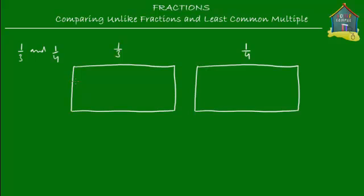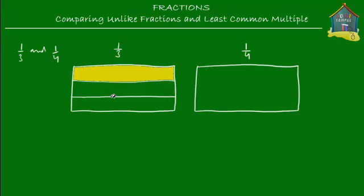Let's mark one-third on the first lasagna. Since we have one-third, that means we cut the lasagna into three slices. Let's cut it horizontally and mark one-third — one-third is one of these long slices. On the next lasagna, we cut into four equal slices because the denominator says one-fourth. So the total number of slices is four, and the fraction one-fourth is this piece here.